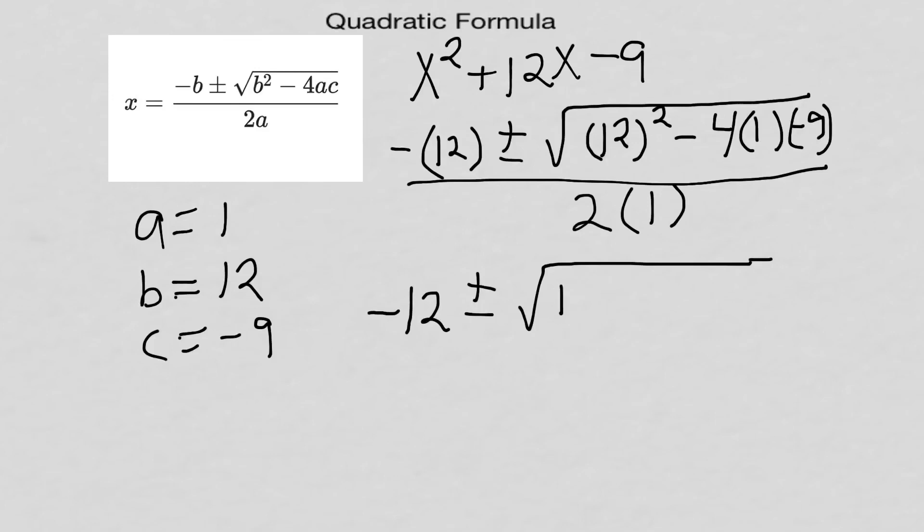Minus 4 times 1 times negative 9, which is going to give us negative 36, over top of 2.